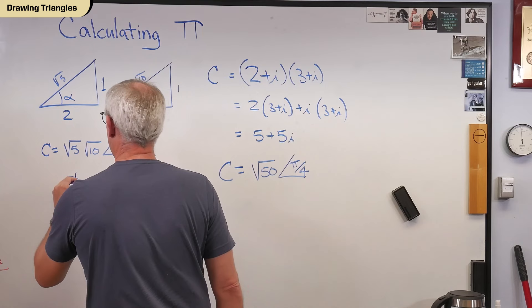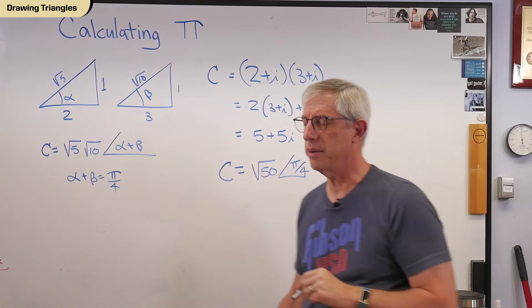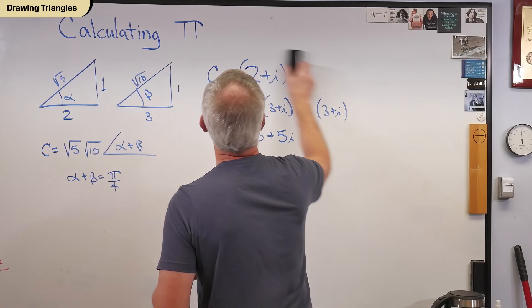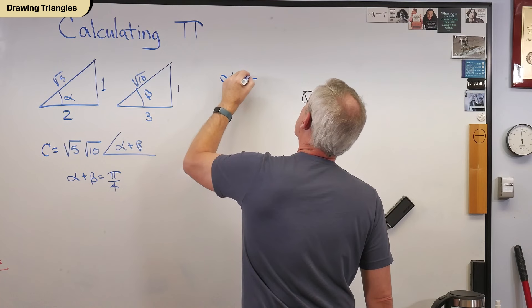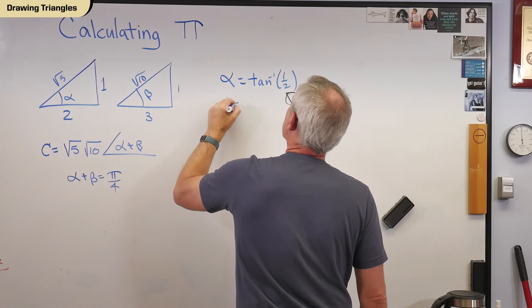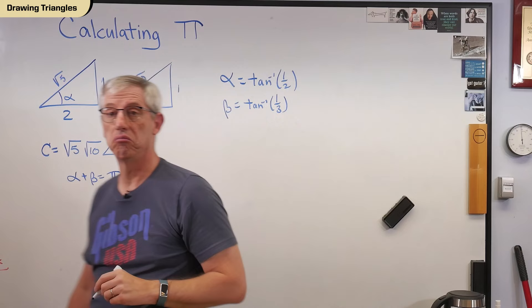Okay, we're getting close. How are we going to calculate alpha and beta? Well, let's see. I might say something like alpha is inverse tangent of a half, and beta is the inverse tangent of a third. Okay. I like where this is going.